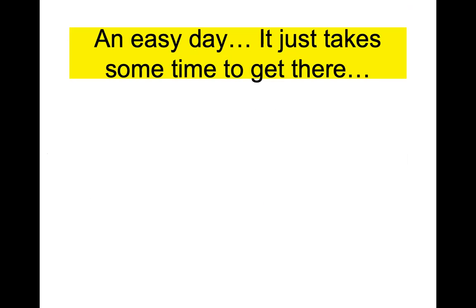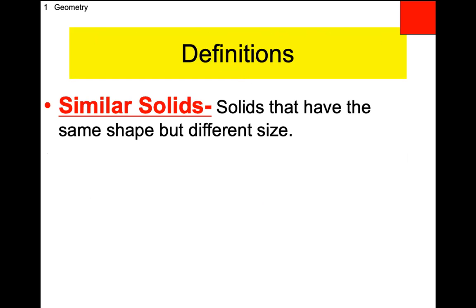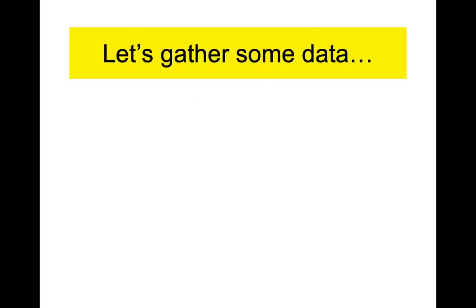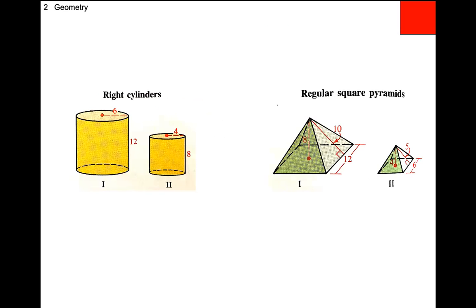Today's class is on similar solids. Similar solids are solids that have the same shape but different sizes — same idea as similar triangles, now in three dimensions. There's basically one key theorem. I've got two pairs of shapes: a pair of cylinders and a pair of square pyramids. Notice the pyramids have all dimensions doubled — the cylinders have also been scaled but it's less obvious.